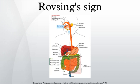The eponym Rovsing's sign is also used in patients with horseshoe kidney, consisting of abdominal pain, nausea, and vomiting with hyperextension of the spine.